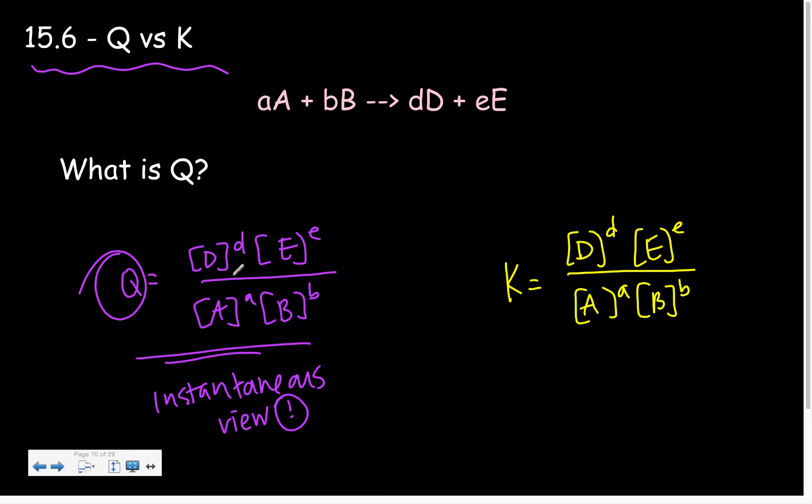Now, the point is that we can compare Q and K to talk about where a reaction is and where it is heading. So K again, equilibrium constant. It is a constant for any reaction at a given temperature. If I take a look at Q, which is where a reaction is at the moment, I can compare these two values to see where a reaction is heading.